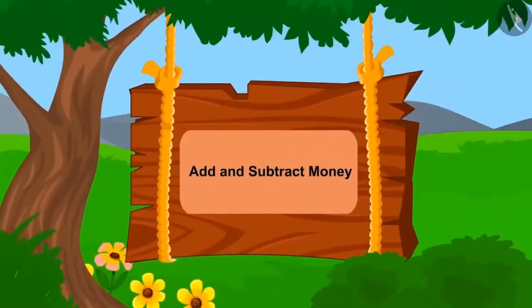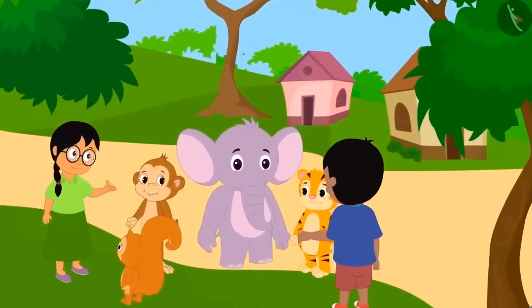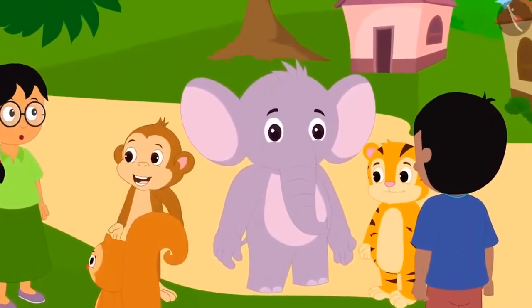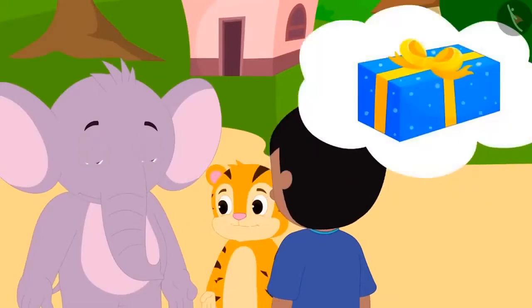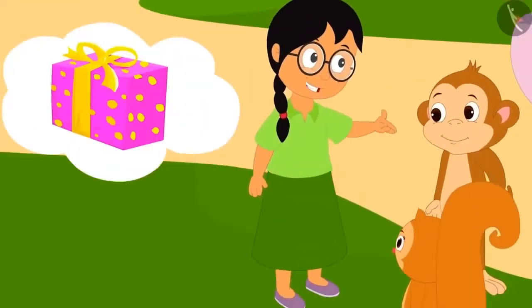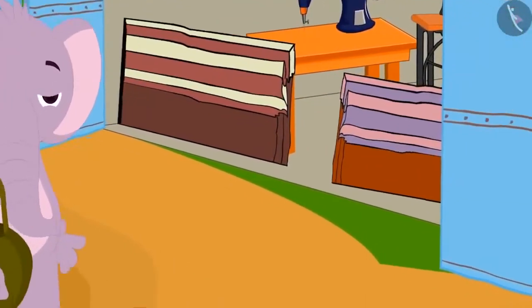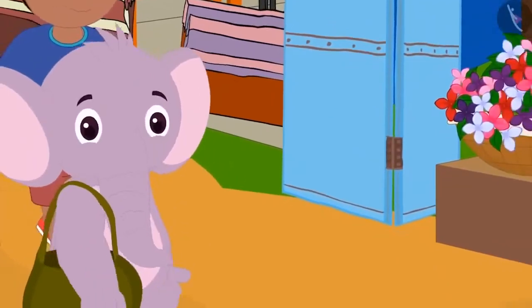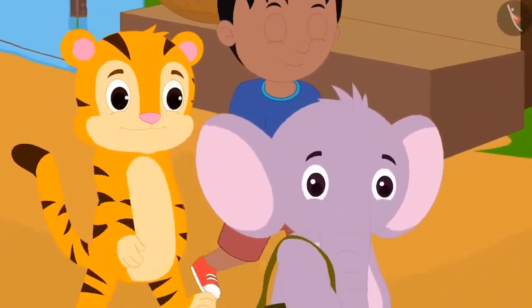In this video, we will learn to add and subtract money. Golu's birthday is coming and all the friends together want to buy a gift for him. Sher Khan, Appu and Raju together will buy a gift, and Meenu, Bablu and Chanda will buy another gift. Let us see which gift Sher Khan, Appu and Raju together want to buy.